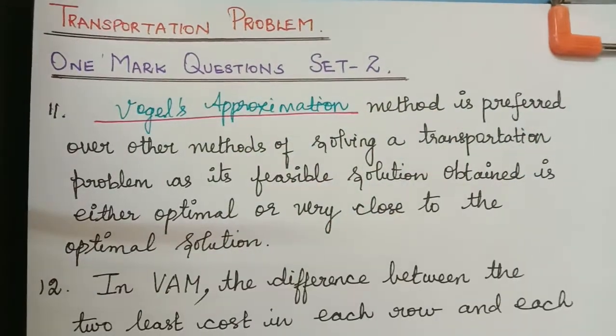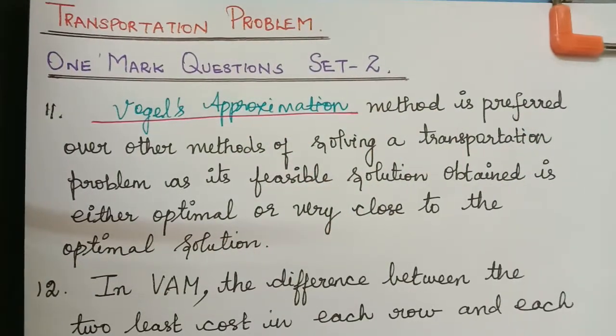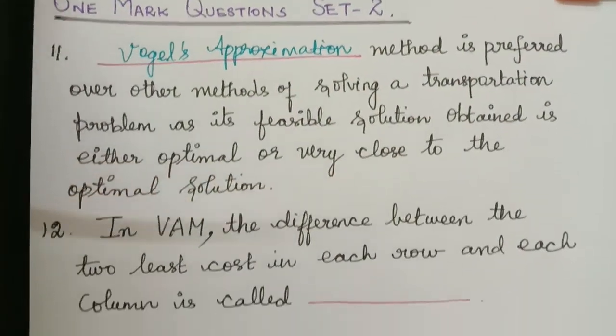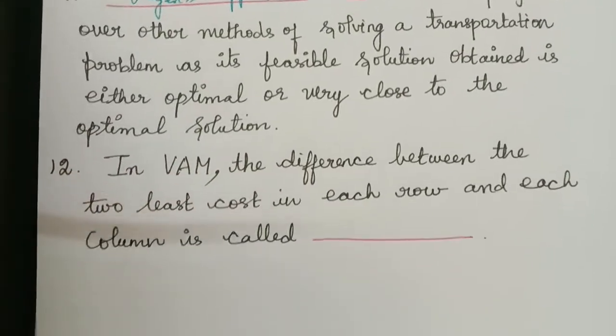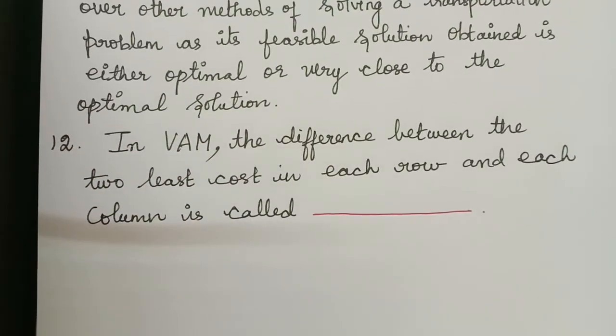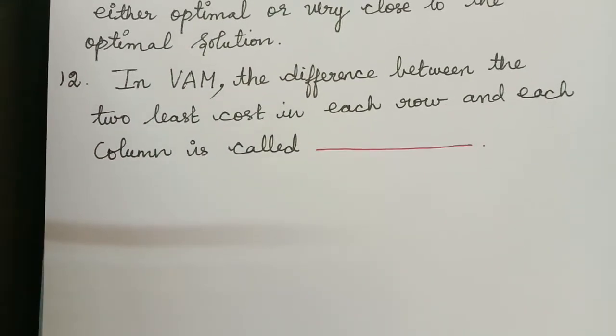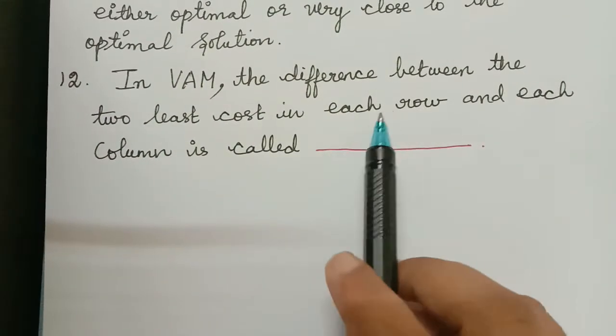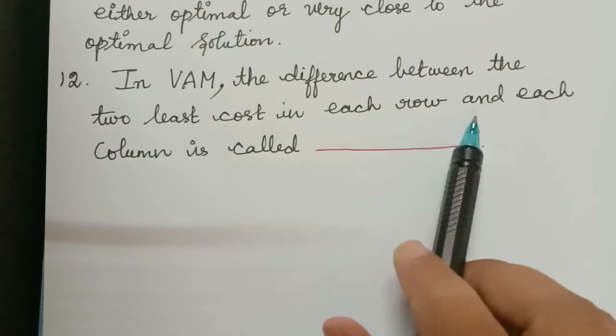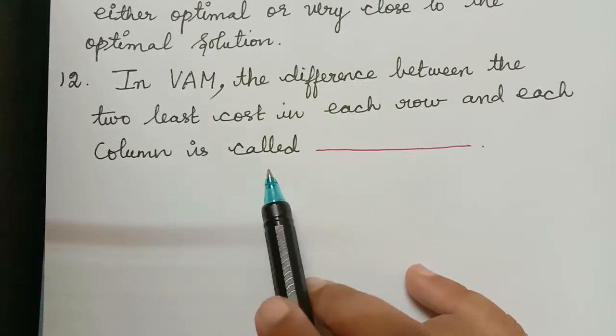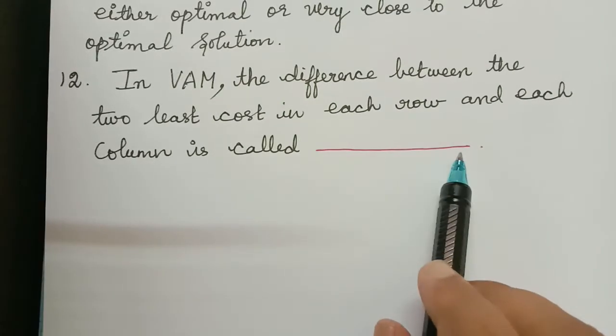The next question is: in Vogel's approximation method, the difference between the two least costs in each row and each column is called what?